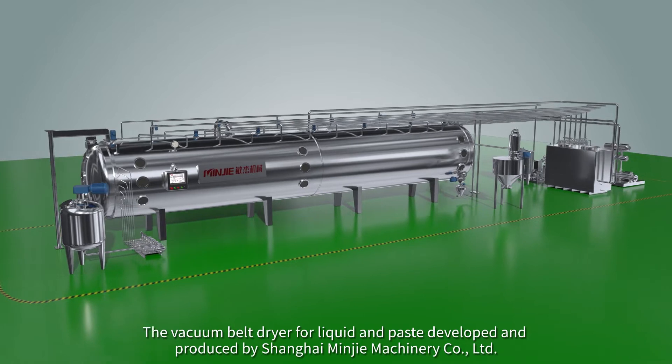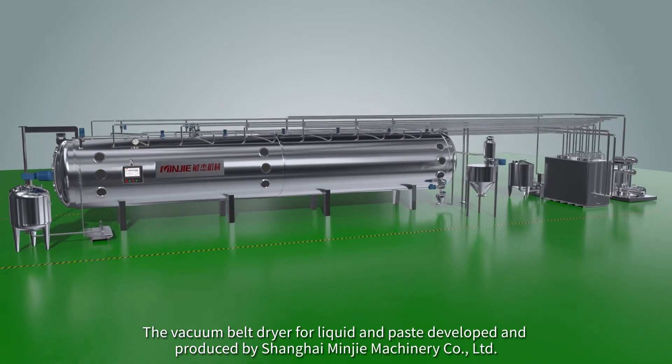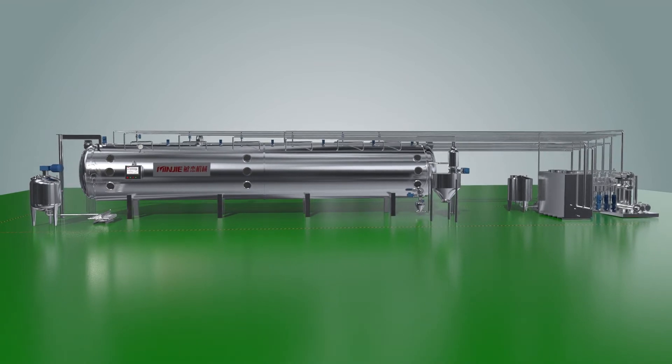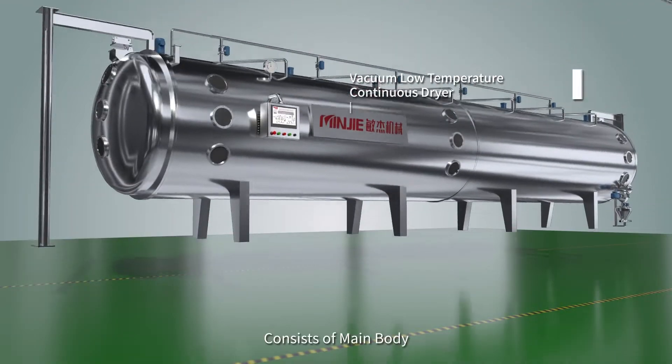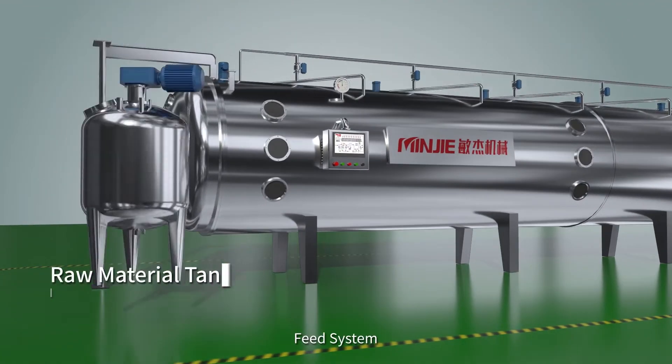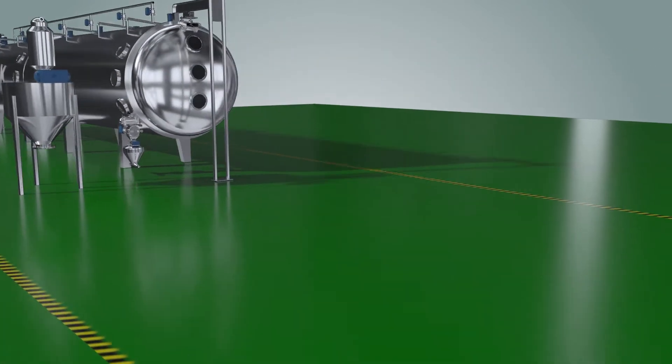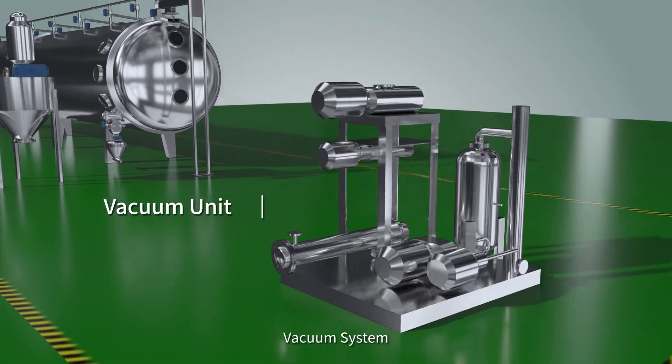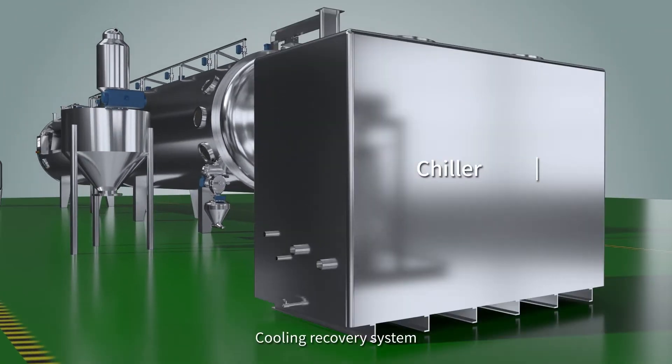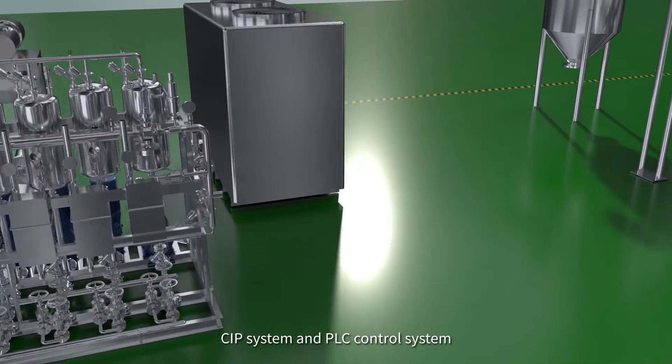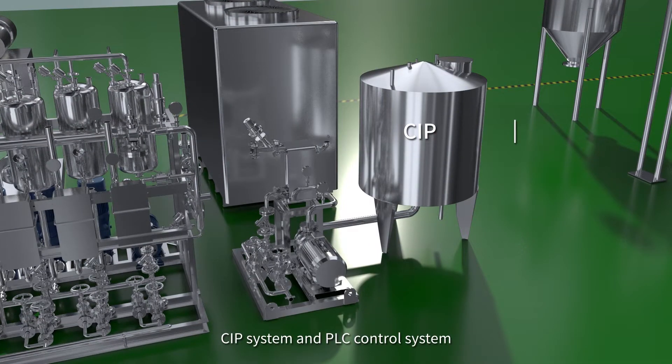The vacuum belt dryer for liquid and paste developed and produced by Shanghai Minjie Machinery Company Ltd. consists of main body, feed system, discharge system, vacuum system, cooling recovery system, heating system, CIP system and PLC control system.